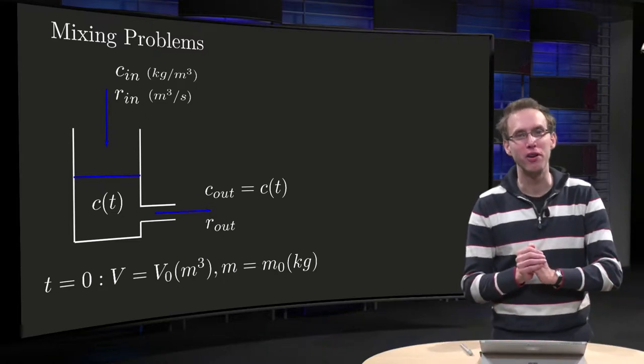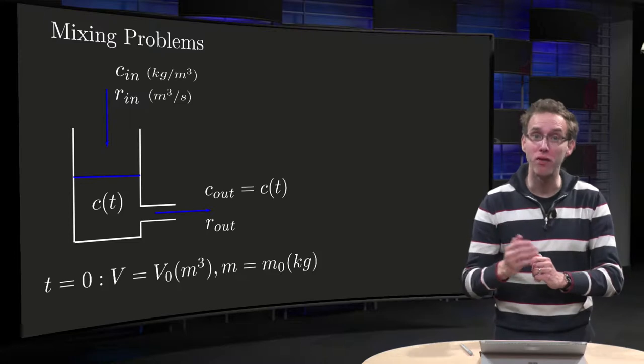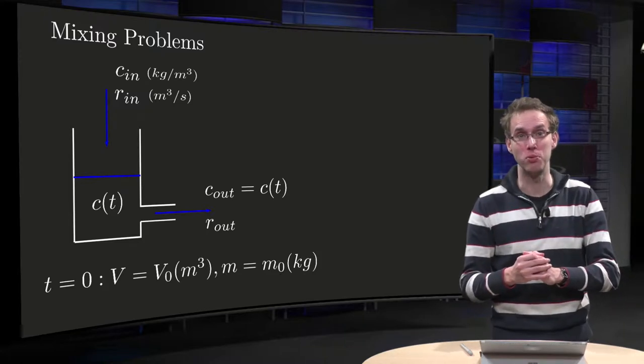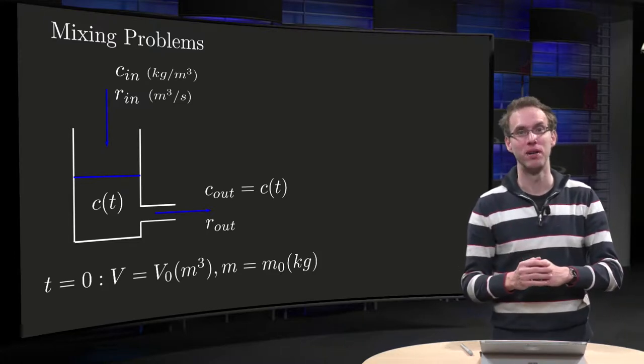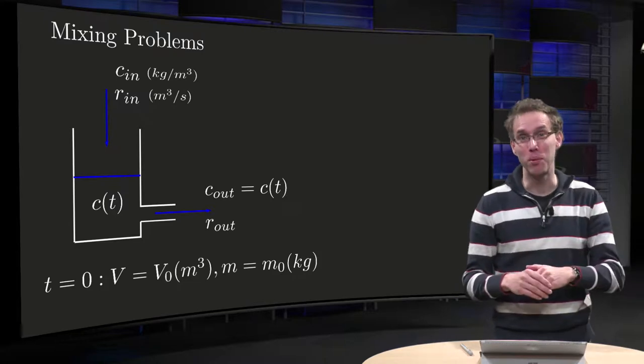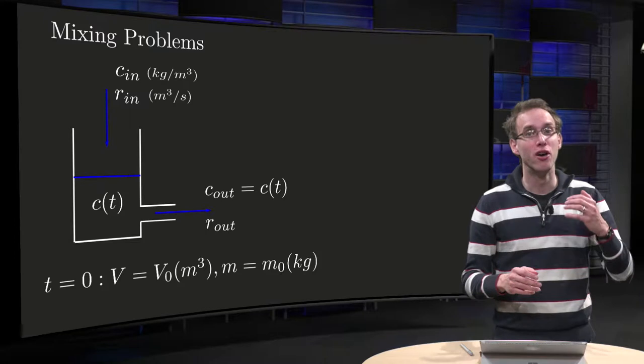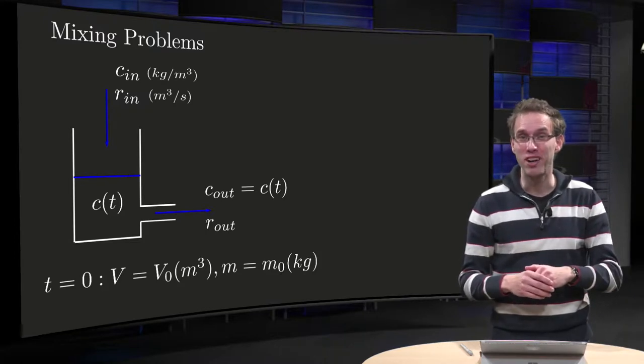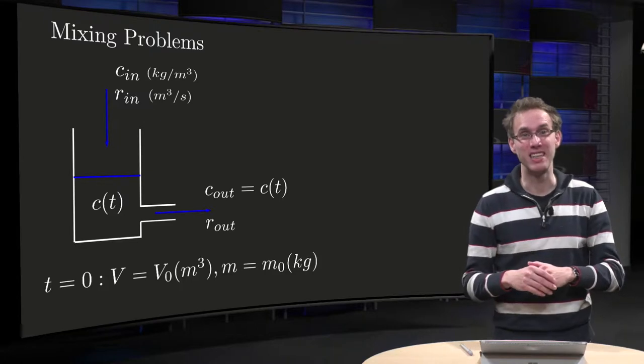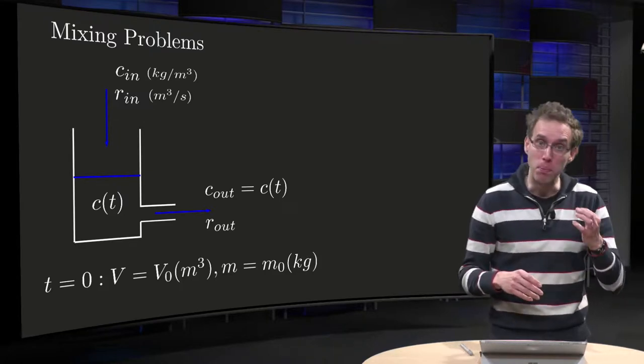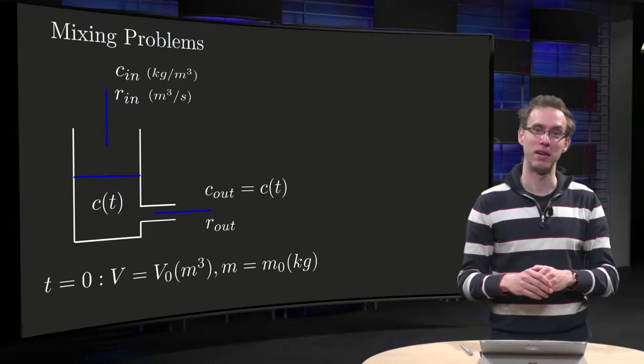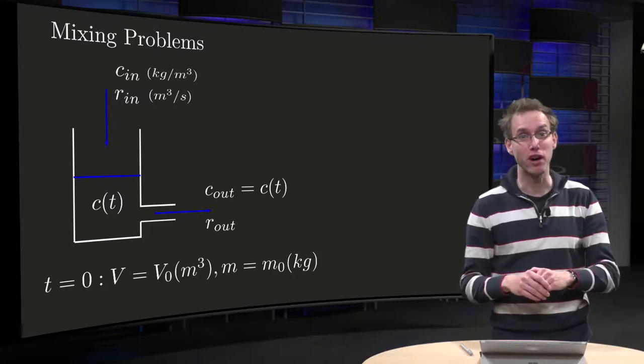In this video we will model a physical problem that you often encounter in calculus textbooks, a mixing problem. But why is this problem treated in so many textbooks? For several reasons. First of all, it is in general very hard to model real life problems. A mixing problem is relatively easy, both in terms of modeling and in terms of mathematics. So it is a good problem to start with.